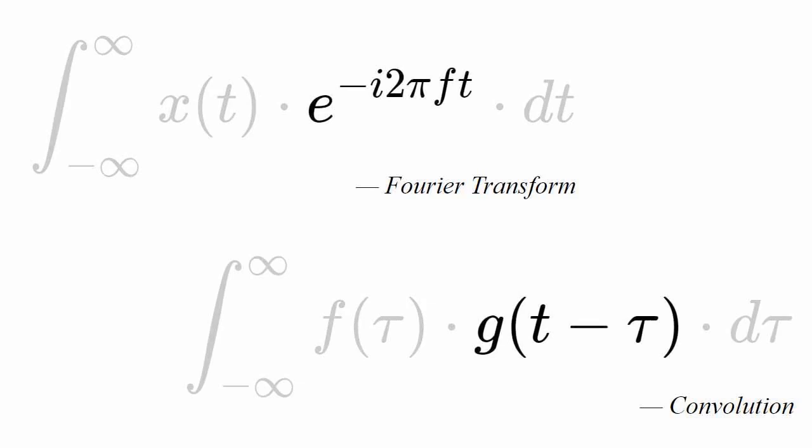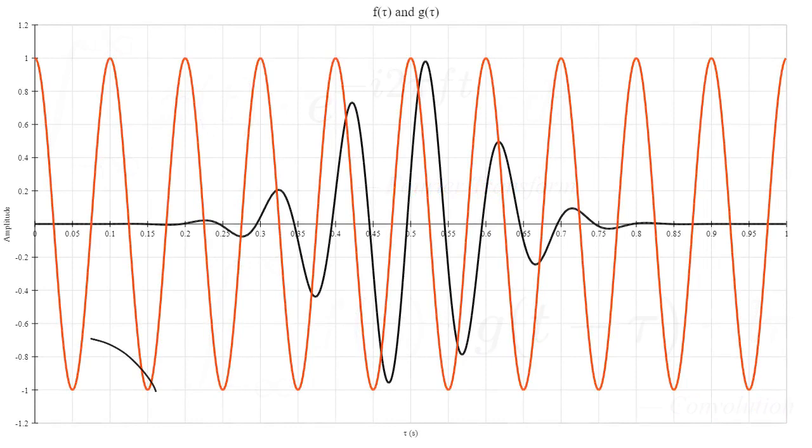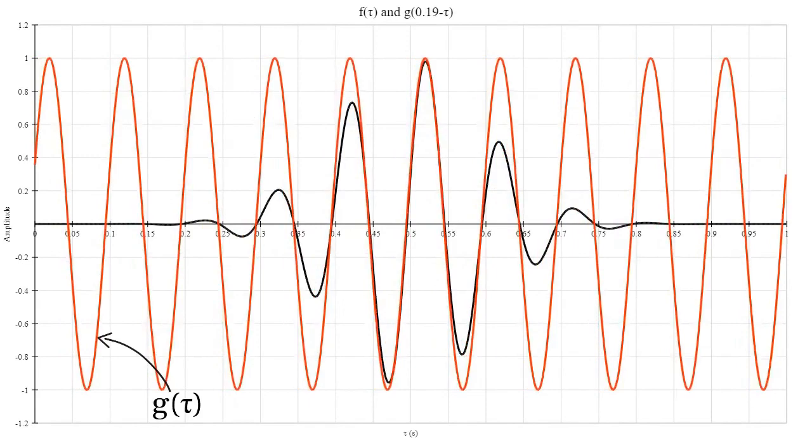In the convolution equation, I used a simple sinusoid as an example of g of τ and slid it over the signal. Now here's the cool thing. The complex exponential saves us having to slide a sinusoid over the signal. How does it do this?